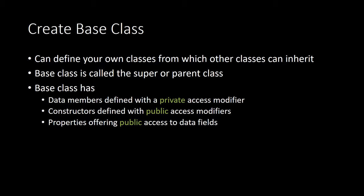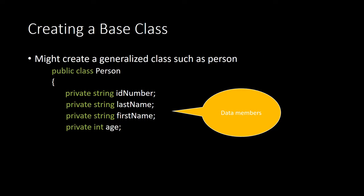You can define your own classes from which other classes can inherit. A base class can also be called a super or parent class. When you create a base class and then create another class, the other class can inherit the data members. When you create a base class, you give it a name and a bunch of data members — your variables defined within the class.